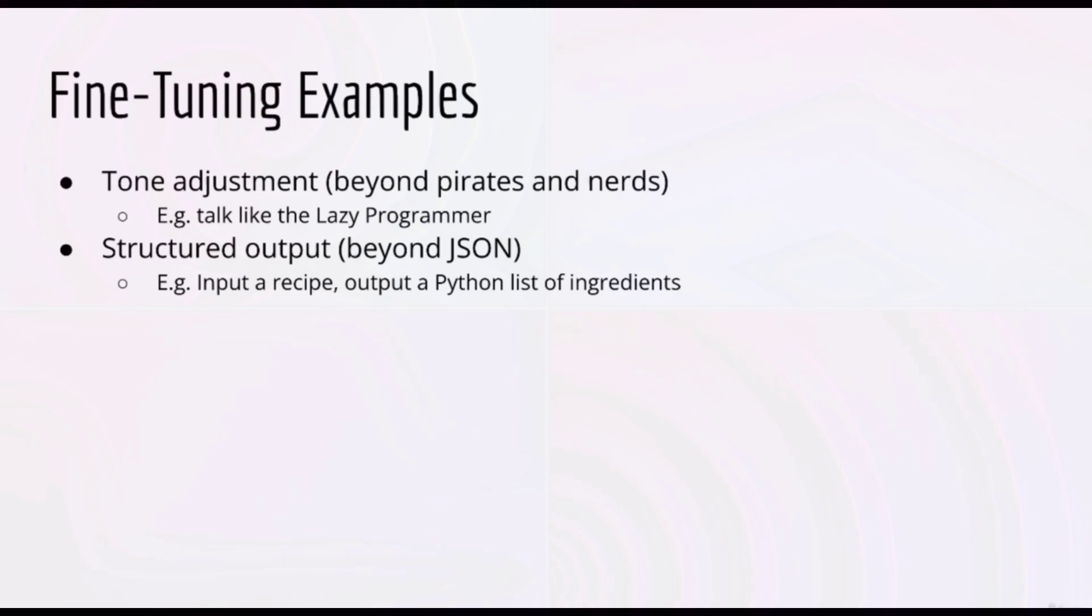Here are a few more examples of how fine-tuning can be used. One is tone adjustment. We've already seen how you can make ChatGPT talk like a pirate or a nerdy scientist. But there are even more specific applications. For instance, what if you want ChatGPT to talk like the lazy programmer? Probably not a great idea, but it's an example.